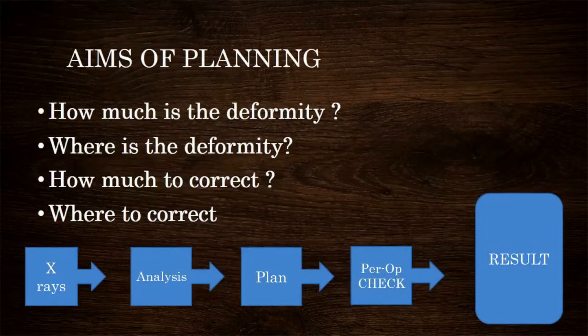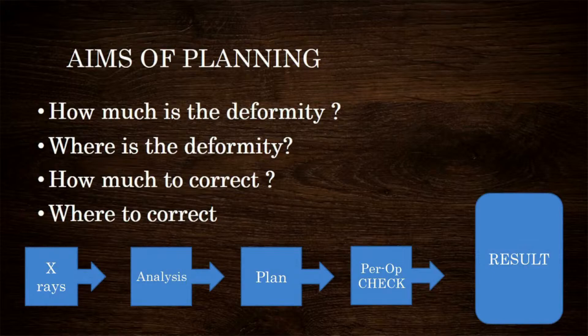One should know exactly how much the varus or valgus deformity is, whether the deformity is in the tibia, femur, or both, and how much correction should be undertaken — and where. The steps in radiological planning for high tibial osteotomy are: obtaining and analyzing proper X-rays, radiological planning, intra-operative verification, and finally obtaining a good result.